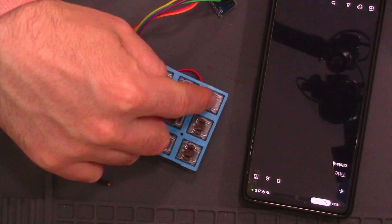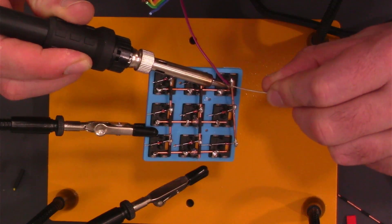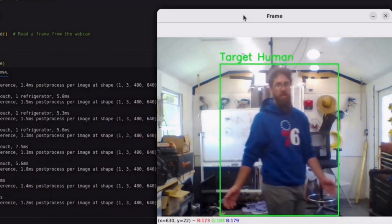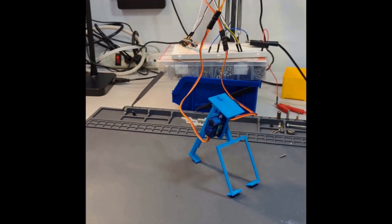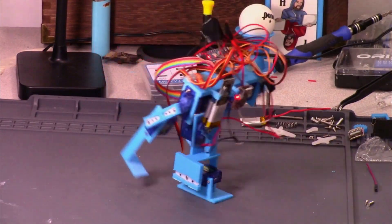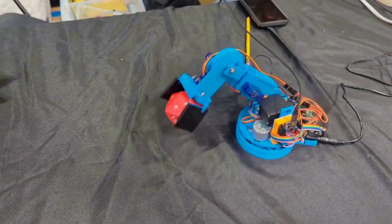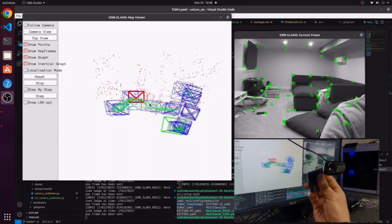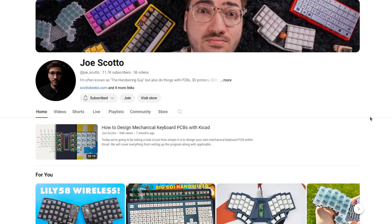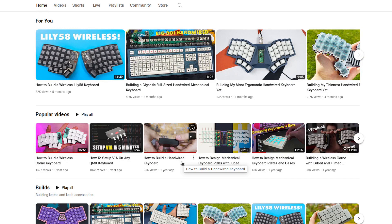This week I make a 3x3 keyboard using 3D printed materials and hand soldering everything together. This video and keyboard that I make is me just following Joe Scotto's How to Build a Hand-Wired Keyboard video. You should check out his stuff if you're interested in building your own keyboard.